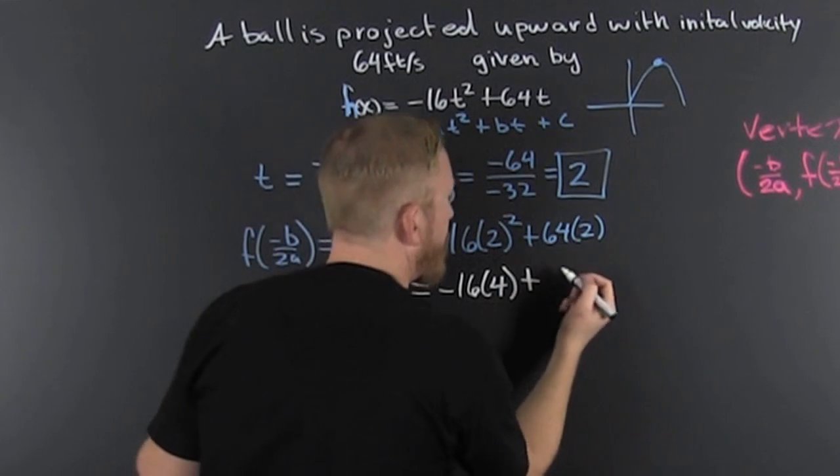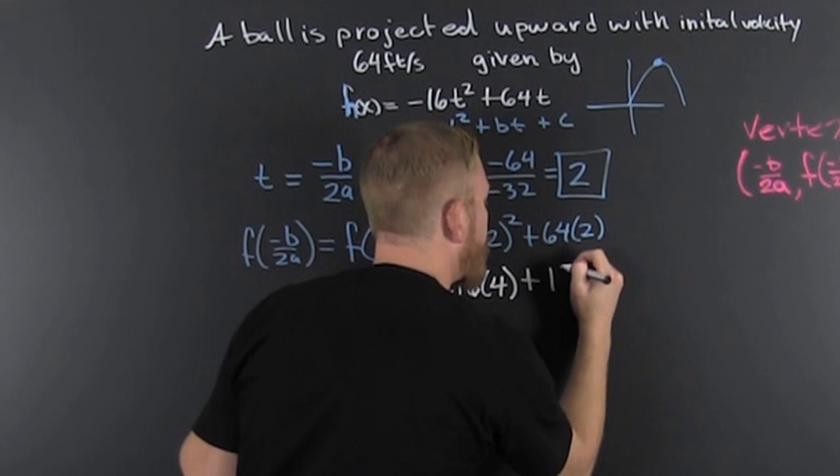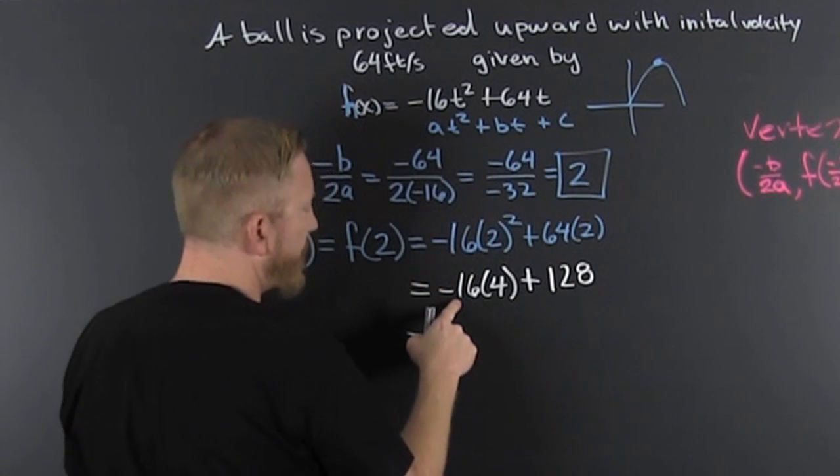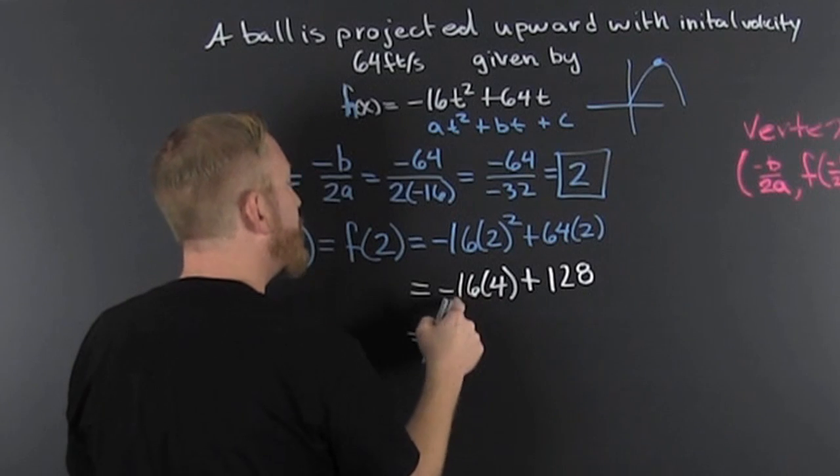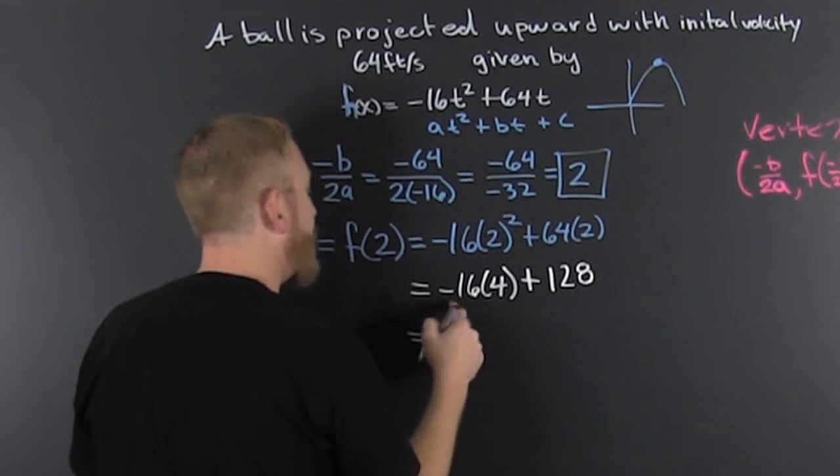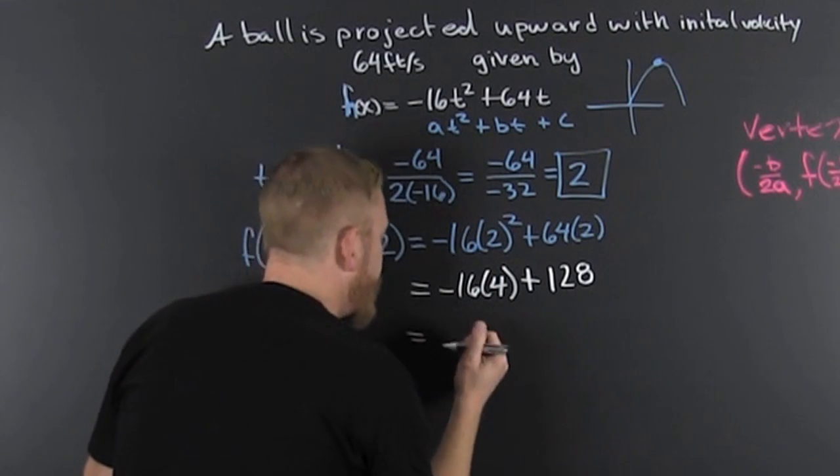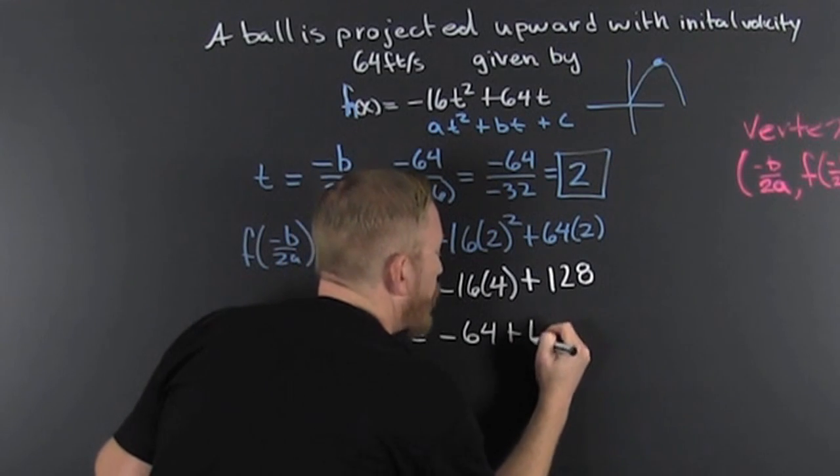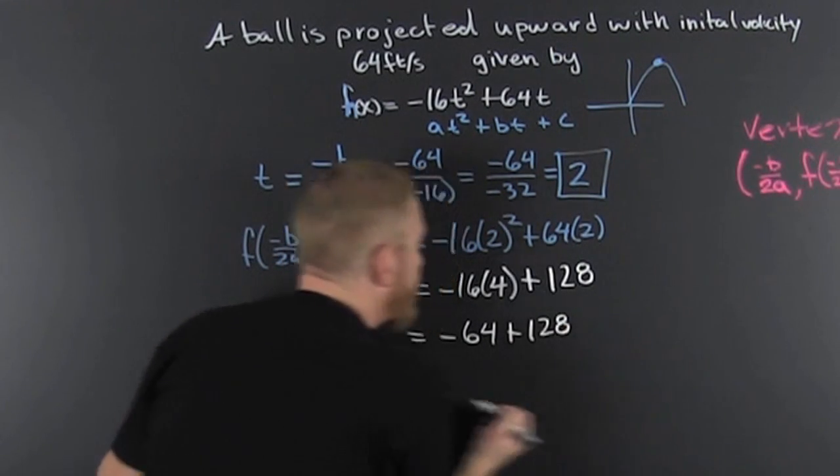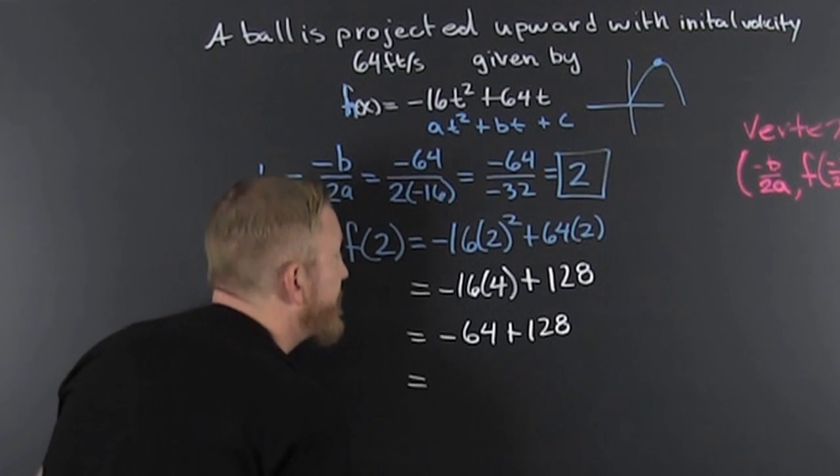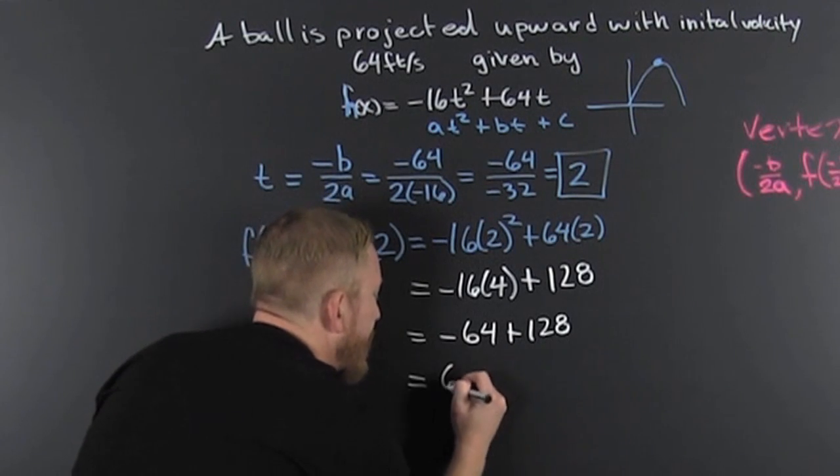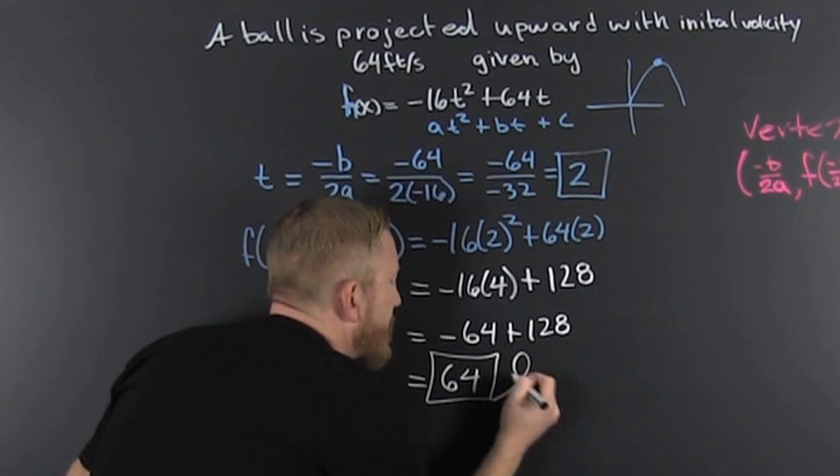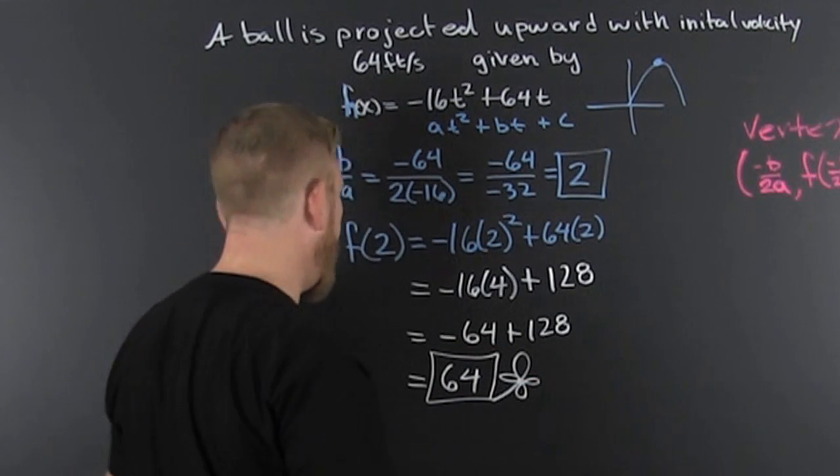Plus 2 times 64 - that's 128. 4 times 16... 2 times 16 is 32, times another 2 is minus 64, plus 128. The difference is 64. So the maximum height that this ball reaches is 64 feet in the air.